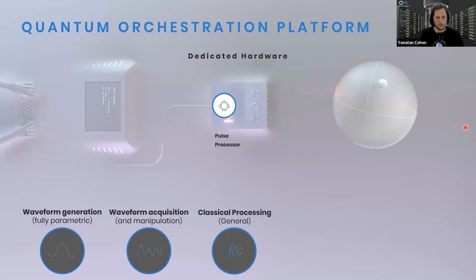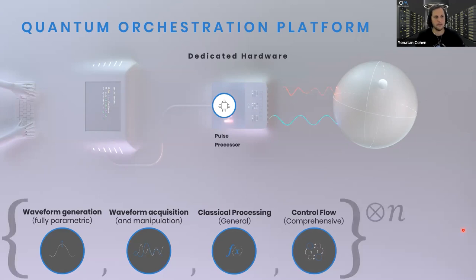And finally, the fourth element is control flow: if-else statements, for loops, while loops, switch cases, and more. You can have the most general control flow with branching of the program, nested loops, subroutines. So you can run on the pulse processor any combination, any quantum program that involves these four elements, as we will see later on today in the examples.